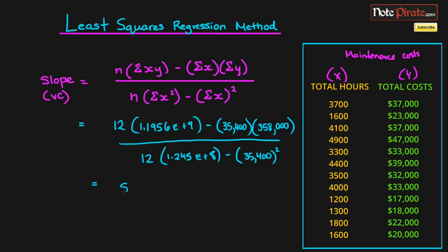That will give us 1.24245 exponent 8, and when you simplify all of this, we're going to get 6.9506, and that is our slope. So on our cost function it'll look like y equals 6.9506x plus the fixed cost portion.